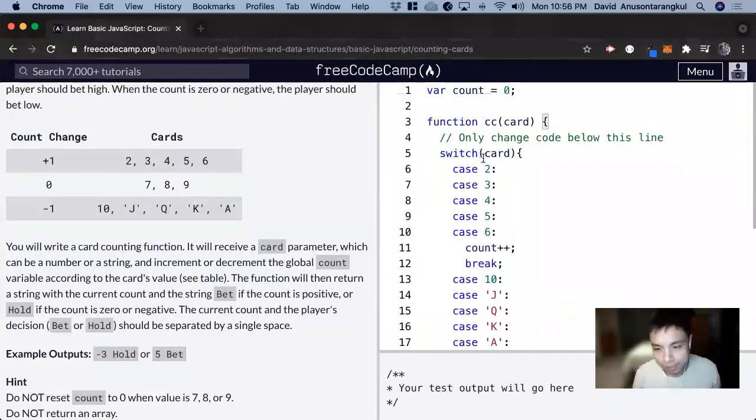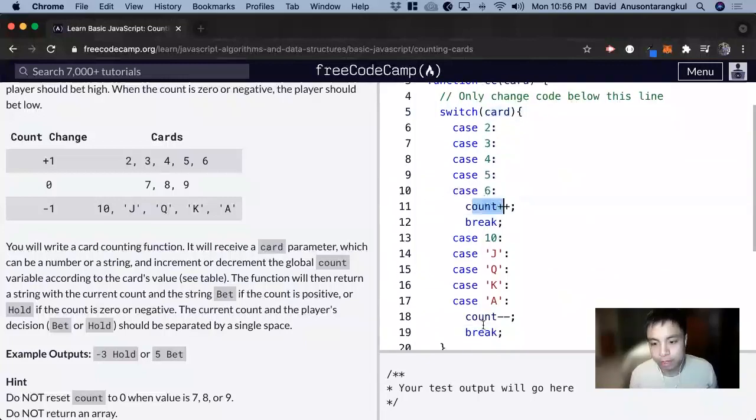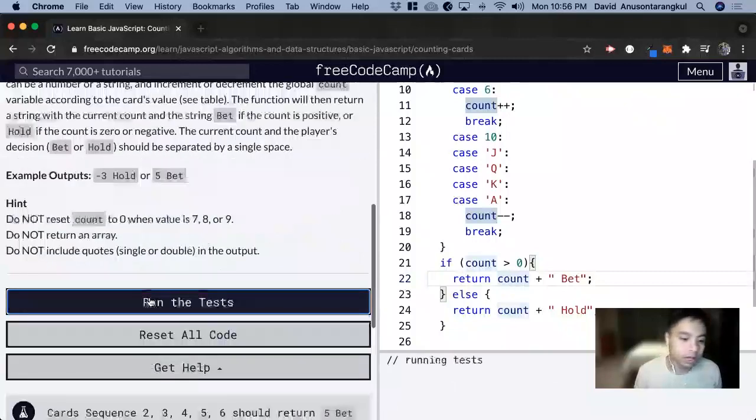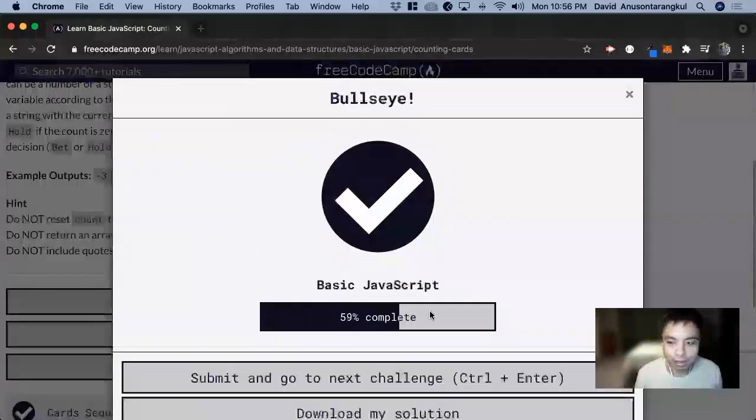We have the case statements for the card, we're incrementing, decrementing, and then returning the count and bet or count and hold. And that's it for this one. Thank you so much.